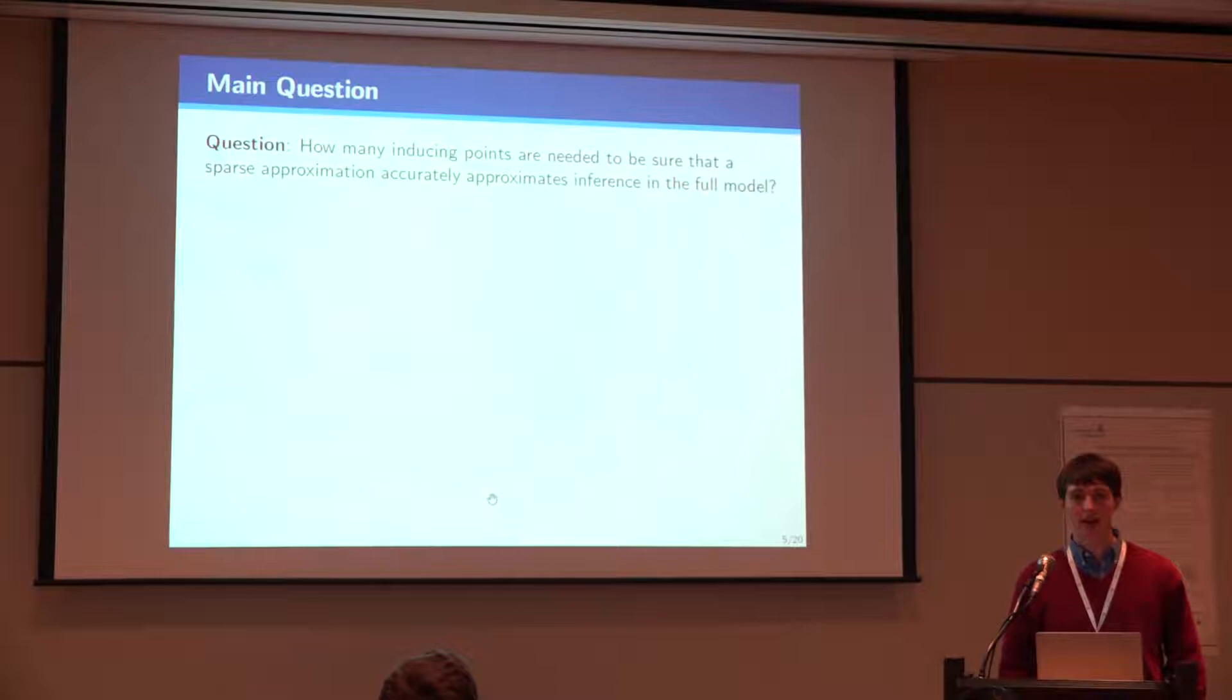So the main question we're going to try to get to in this talk is how large should we really need to take M? How many inducing points do we really need to be sure that our sparse approximation is really close to the full model? It's known that if we use standard inducing points and we place them exactly where the data was, then we can take M equals N. But in that case we don't really get any computational benefit. So we want to say something in the sparse regime.